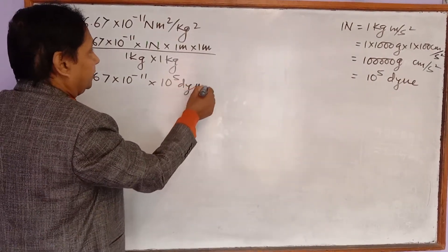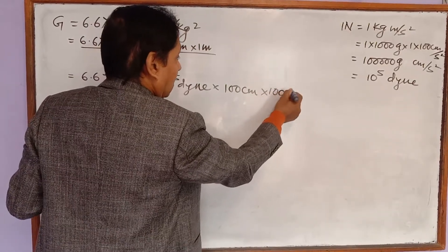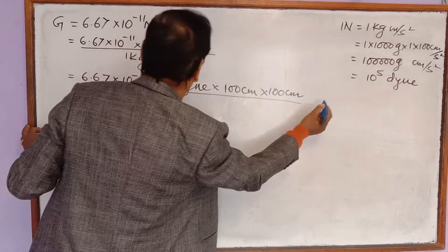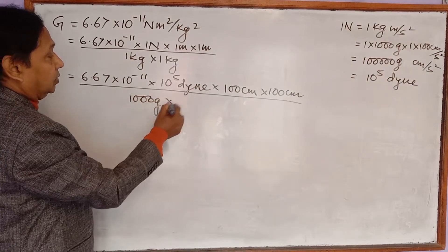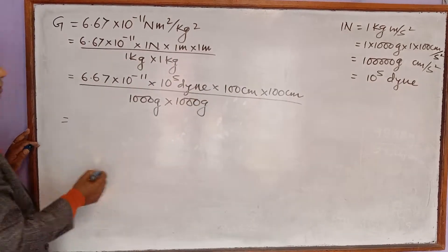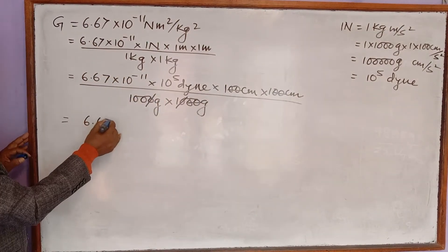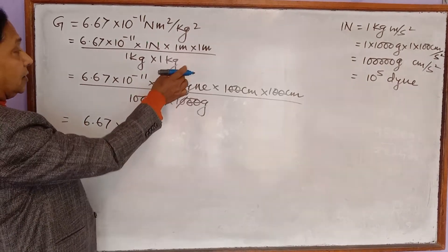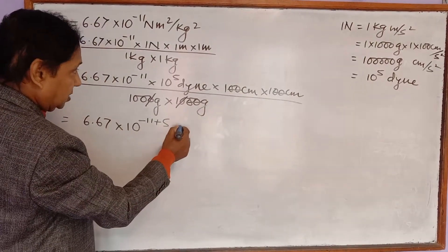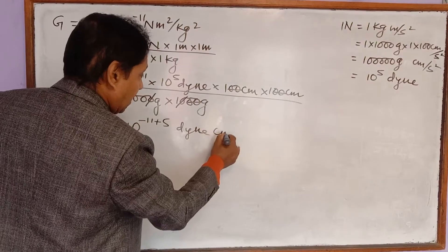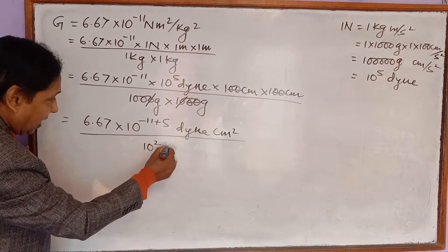One meter is equal to 100 centimeter, and another one meter is 100 centimeter — these go in the numerator. In the denominator, one kg equals 1000 gram, and another one kg equals 1000 gram. Now the powers can be combined: we have 10 to the power 5 from dyne, plus 10 to the power 2 from each meter conversion, giving 10 to the power 5 in the numerator, with centimeter square and gram square in the denominator.